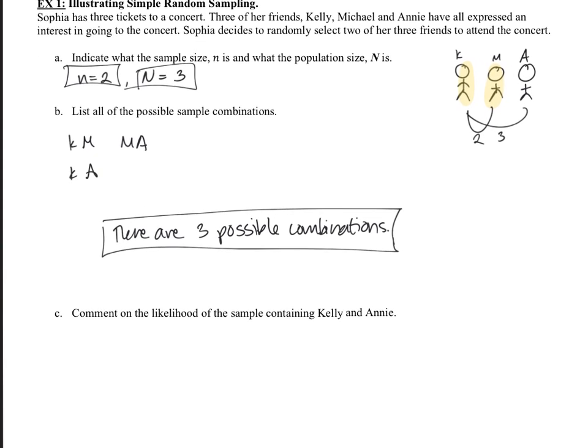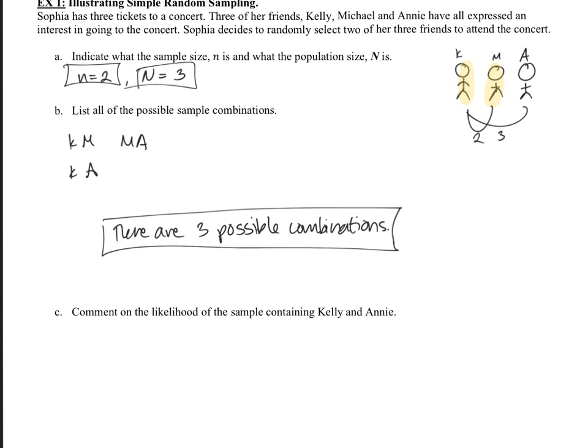Lastly, we're going to comment on the likelihood of the sample containing Kelly and Annie. So the likelihood or the probability of the sample containing Kelly and Annie, well, that probability is just going to be, let's see, there's only one time it contains Kelly and Annie. So it's just one out of three is the probability or the likelihood.